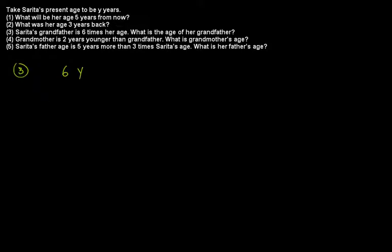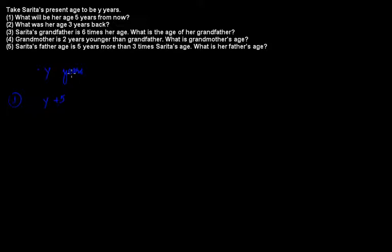All of these — y+5, y−3, 6y, 6y−2, and 3y+5 — are algebraic expressions. We are not writing complete statements; in this question it is limited to writing algebraic expressions. For example, a complete statement would be 'Sarita's age after five years will be y + 5,' but here the answer is just the algebraic expression itself.